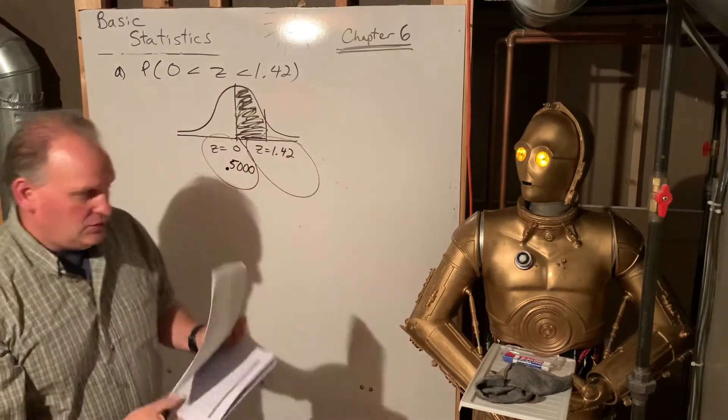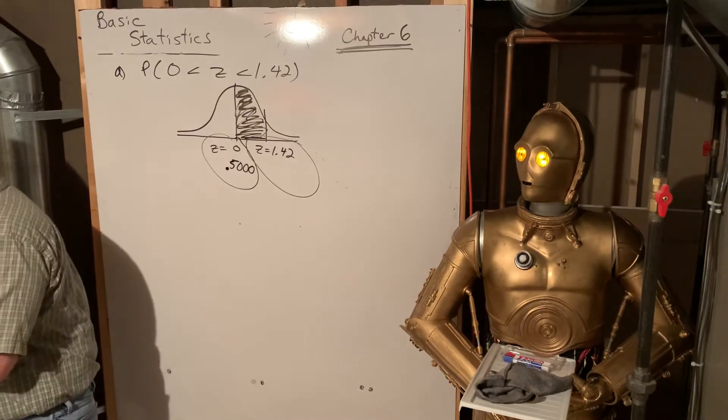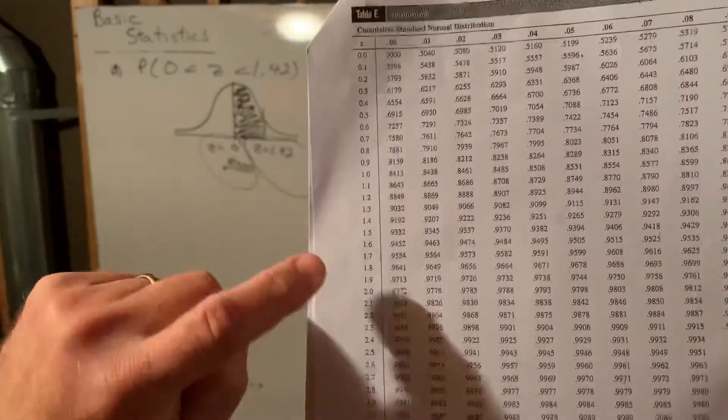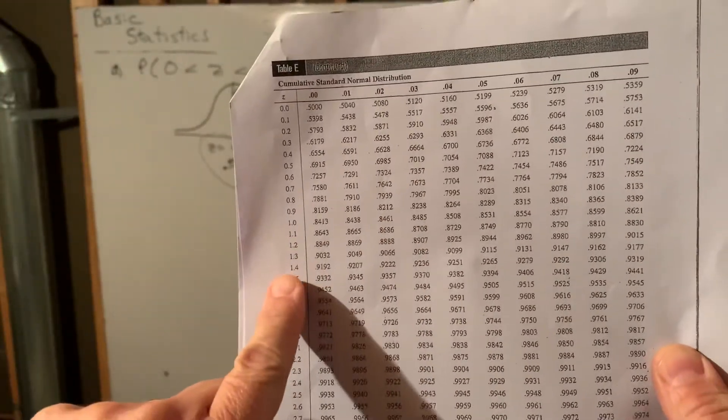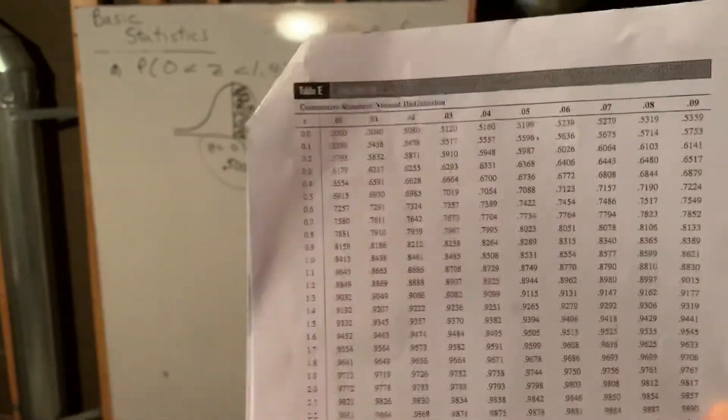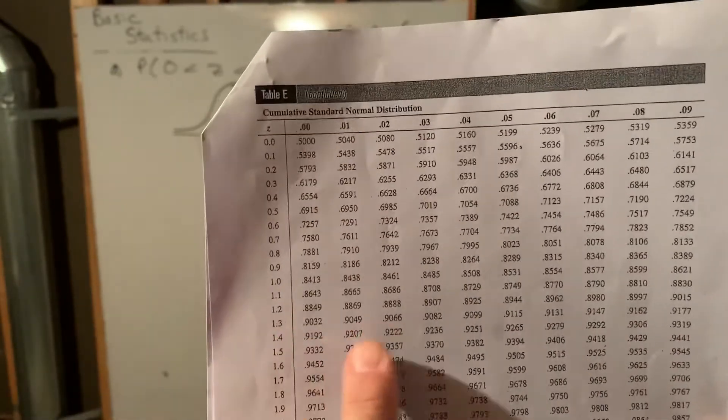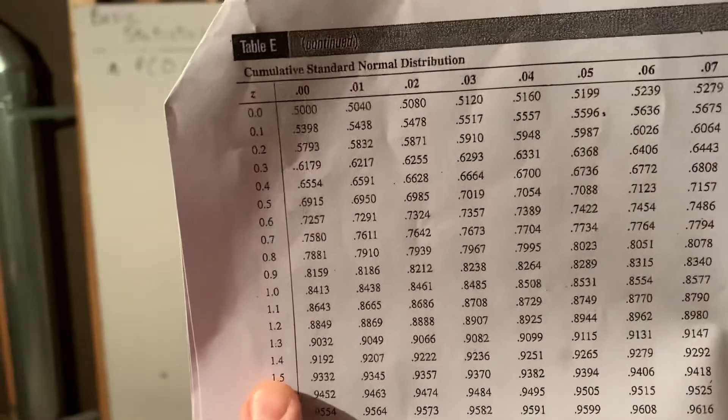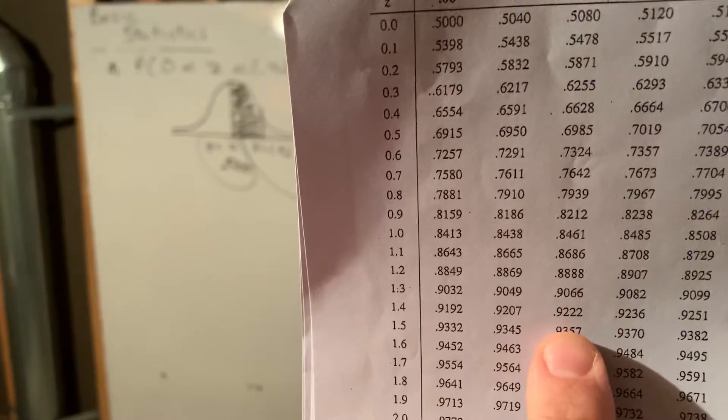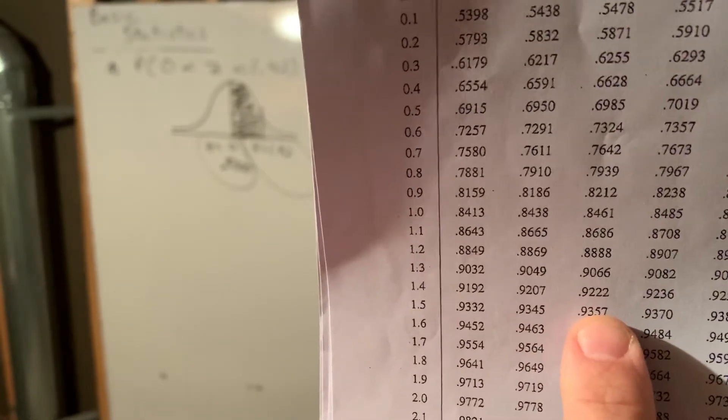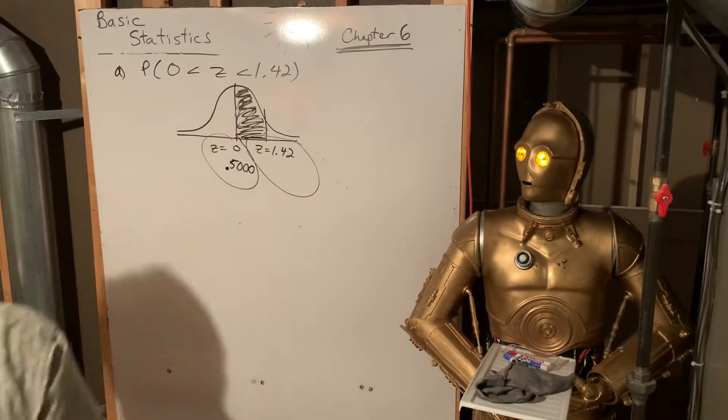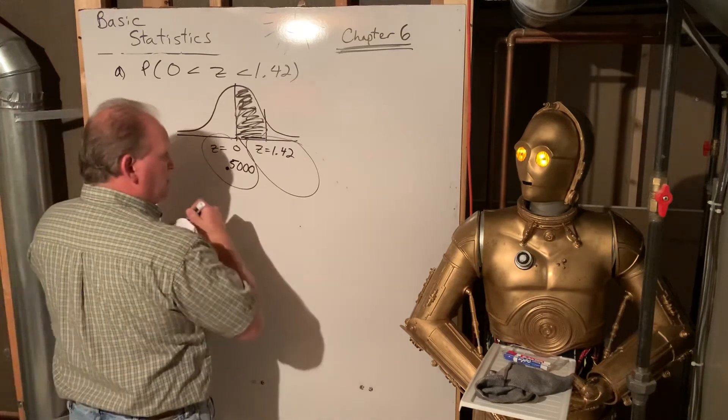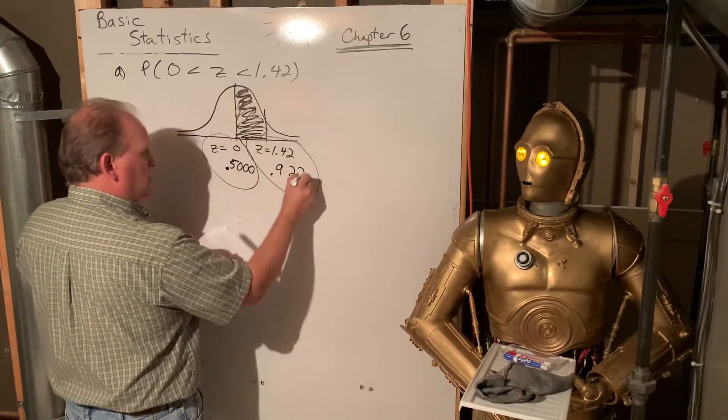Let's see what z equals 1.42 is. We're going to take a look at this on the chart. 1.4. And then you follow the top of it. See how that says 0.02? So 1.42 would be the intersection of those two. It's kind of an X and a Y. So we get 1.42 is 0.9222. And so that means from this line all the way down to zero is 92% of the area. 0.9222. About 92%.